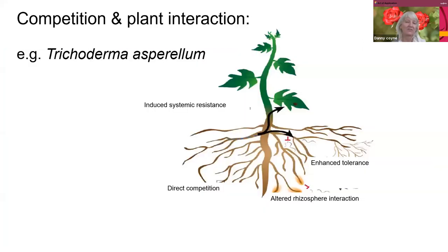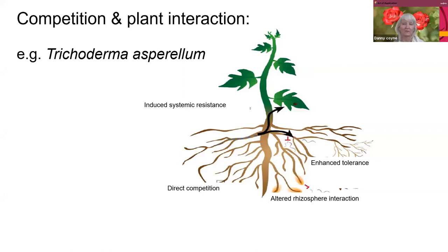Finally, amongst the biocontrols, there are Trichoderma products. These fungi colonize the roots and thereby protect the plant from nematode attack. Some species might also affect nematodes directly. They are quite useful because they induce the immunity of the plant. These are useful products available on the market.